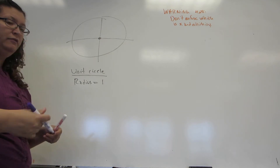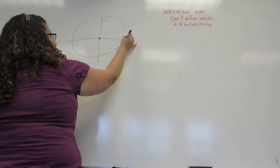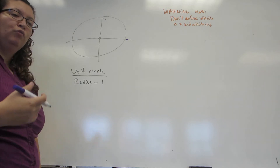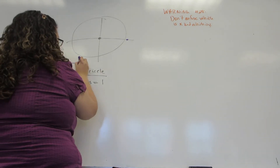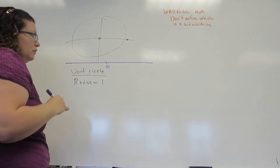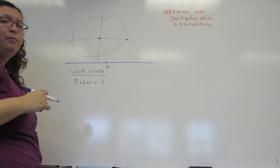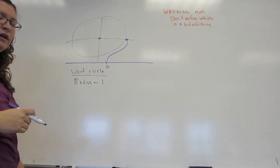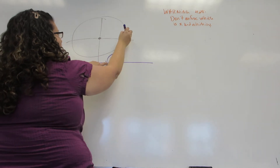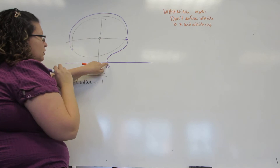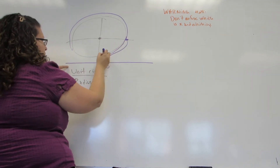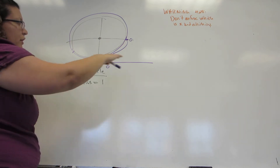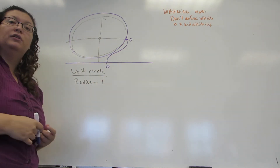To find the unit circle value of any number, we're always going to start at the positive x-axis, just like we do for any angle. We're going to use something called a wrapping function. What a wrapping function does is it takes the real number line, with zero in the middle, and literally wraps it around the outside of the unit circle. The positive numbers wrap one way around the circle, and the negative numbers wrap the other way, so that every point on the real number line corresponds to a point on the unit circle.